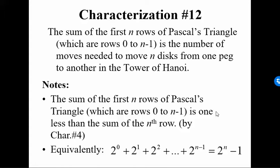Here's another way to state this characterization. 2 to the 0, which is the first row, the top row, it's row 0, plus 2 to the 1 plus 2 to the 2 up through 2 to the n minus 1, is equal to 2 to the n minus 1. By the way, this 2 to the n minus 1 is different than this 2 to the n minus 1.